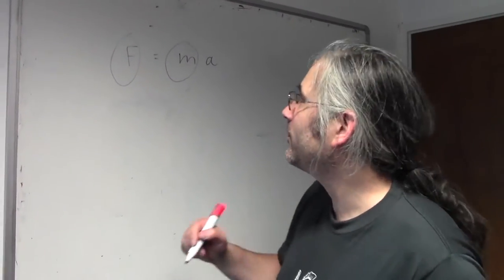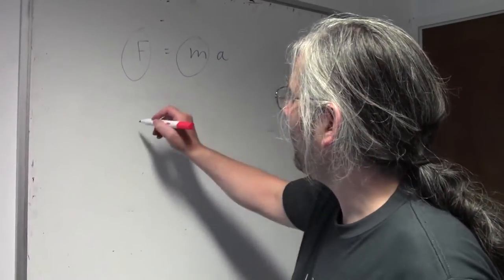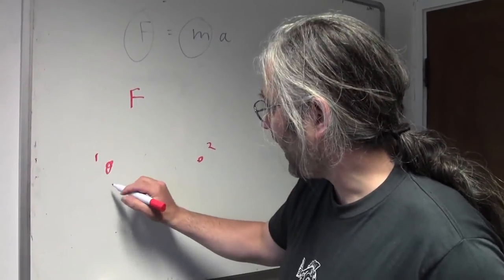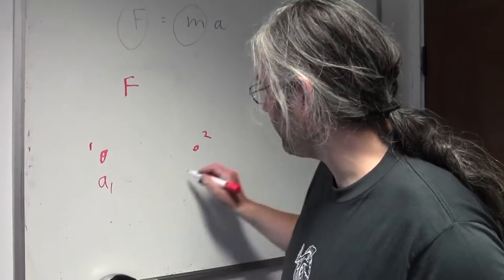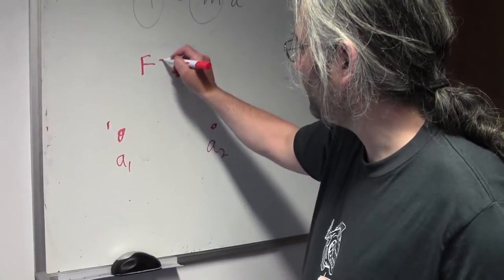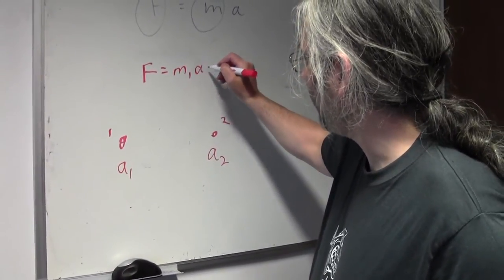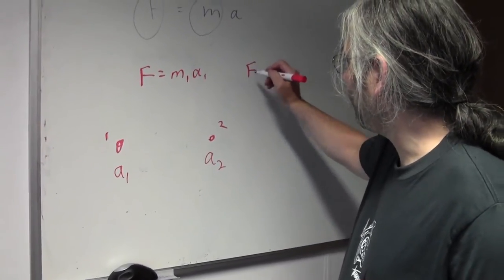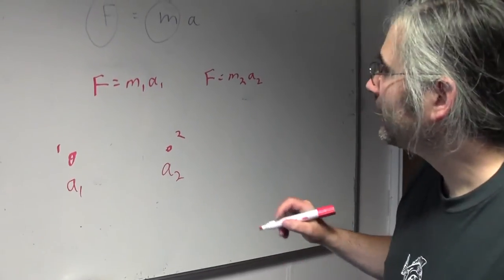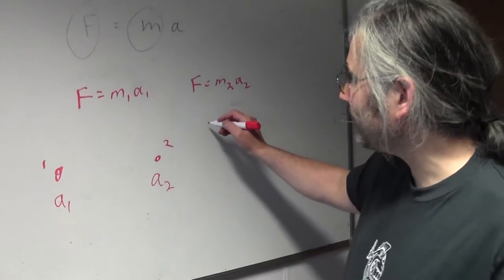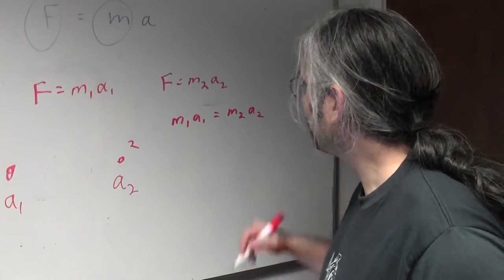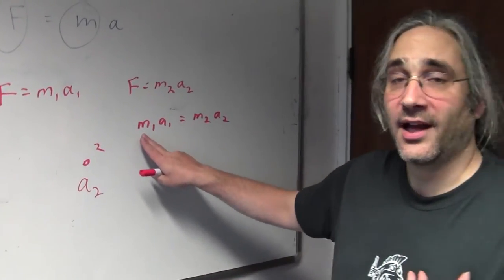So we have two objects, object 1 and object 2, and this has an acceleration a1 and this has an acceleration a2. And this tells us that F equals m1a1 and that F also equals m2a2. So we actually have a genuine law of physics that tells us that m1a1 equals m2a2. So now we actually have an explanation of mass.